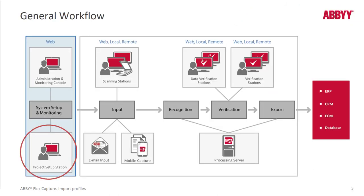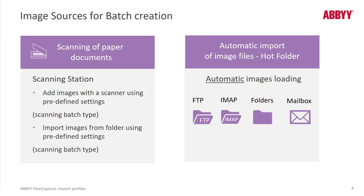Where this work takes place is in the system setup and monitoring position in the workflow. Apart from the actual production workflow, this is done in the project setup station. You can think of manual ingestion of images into FlexiCapture as being performed with a scan station, whereas automatic ingestion happens via email ingestion or monitoring a folder or an FTP site.